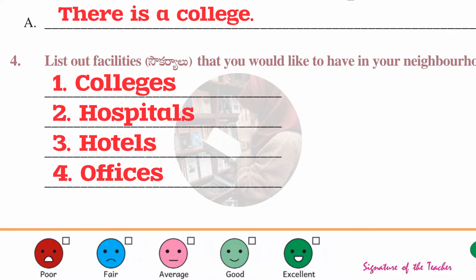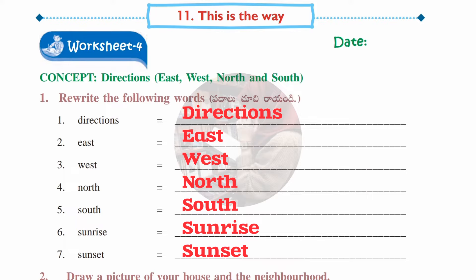Worksheet number four is taken from the concept 'Directions — East, West, North, and South.' Some words are given which you need to rewrite: Directions, East, West, North, South, Sunrise, and Sunset. Those are the seven words to rewrite.